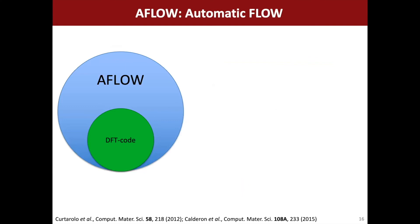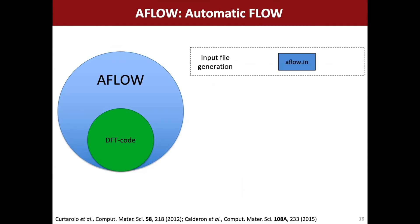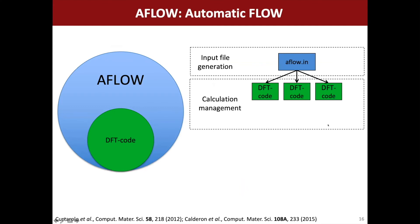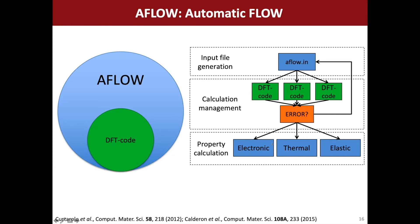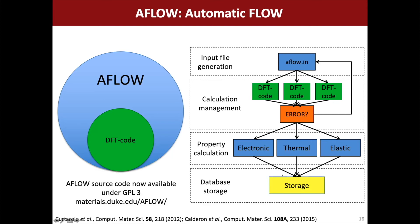The way AFLOW works is it wraps around the DFT code. From a single aflow.in input file, you can set up multiple DFT calculations. If there's an error in the calculation, it restarts, changes some parameters, and tries to rerun it. At the end when the calculation is finished, it parses the results — it can calculate things like the electronic band structure or band gap from a single calculation, or combine multiple DFT calculations to calculate thermal and elastic properties, or thermodynamic phase diagrams and convex hull phase diagrams. Then it pipes the results into a database for online storage and dissemination.